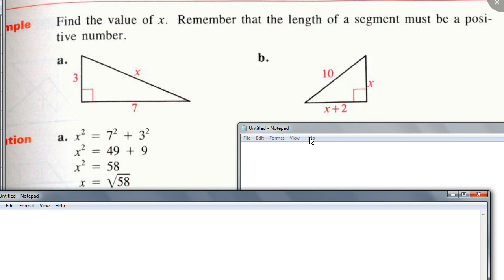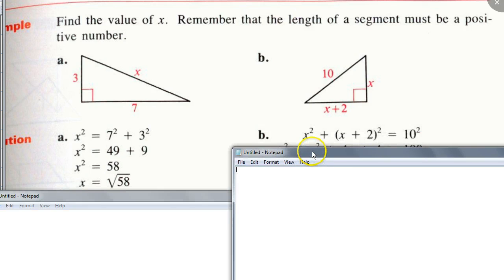Alright. Now what about B? Who could tell me which equation I need to use? Nor, what do you think? You could do X squared plus X plus 2 squared equals 10 squared. Good. And X plus 2, you need parentheses around it, right? Yeah. Alright.